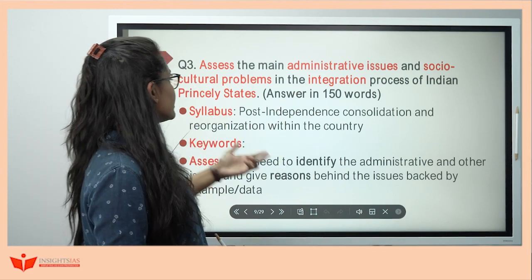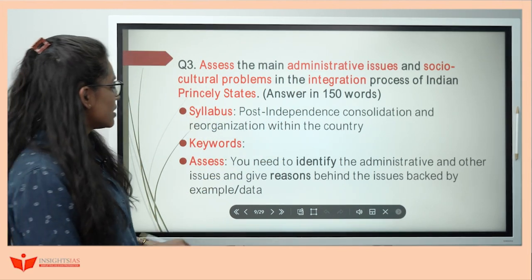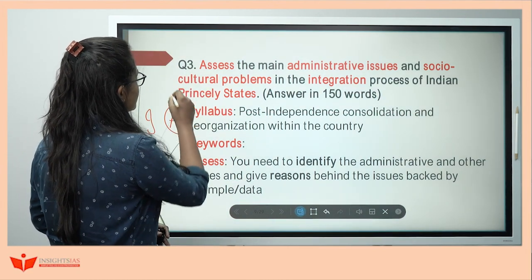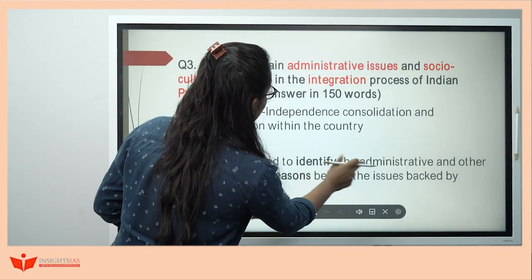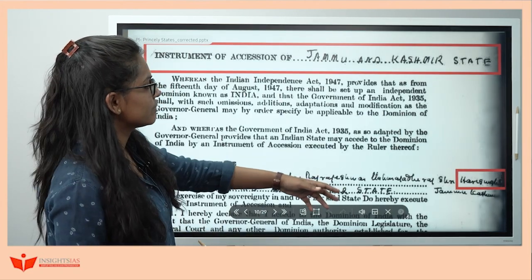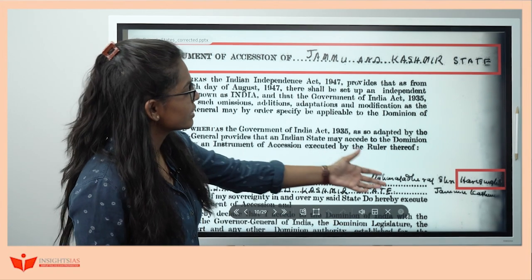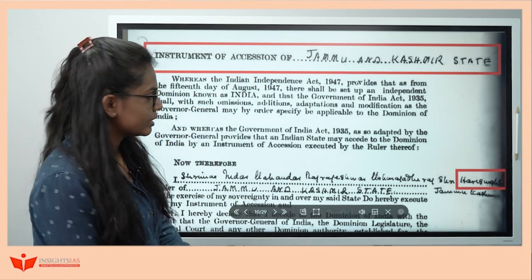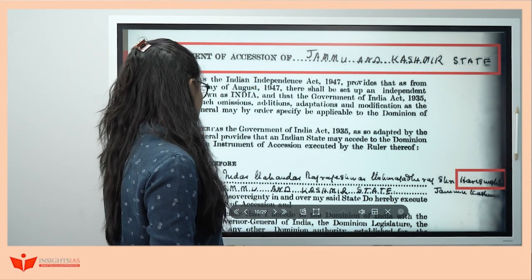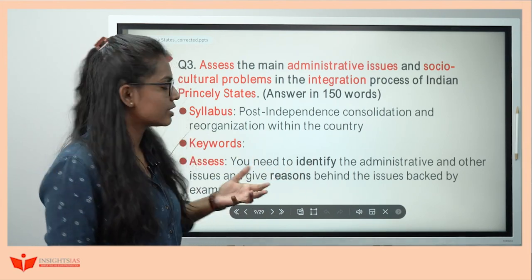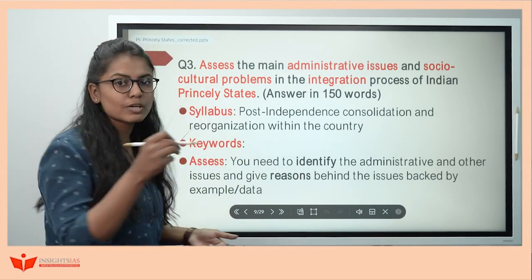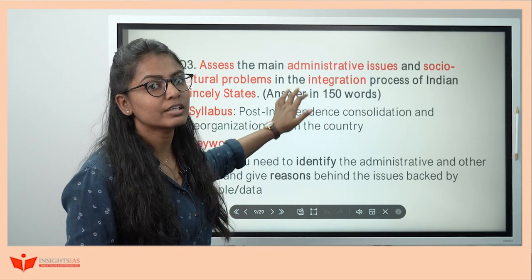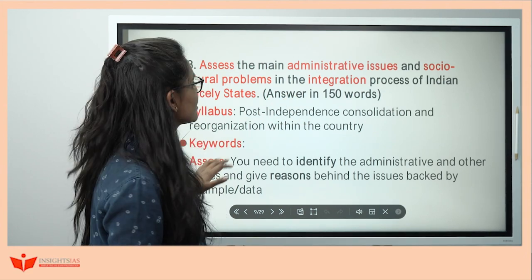Now understand what integration is and what princely states are. There are two terms: integration and accession. The instrument of accession is a document signed by the ruler of that time, acceding their territory to mainland India — for example, Hari Singh acceding Kashmir to India. Integration, on the other hand, is the act of uniting different things — uniting small princely states into mainland India. They didn't ask about accession; they asked about integration, so don't write about accession here.